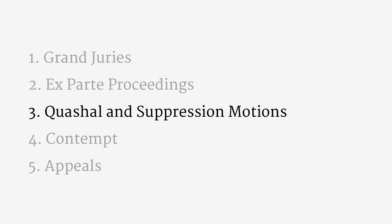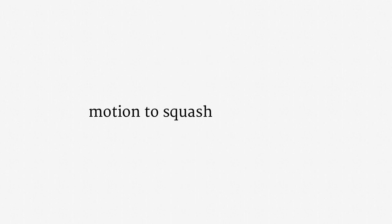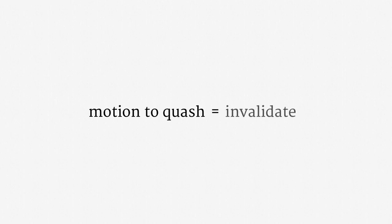Now on to quashal and suppression motions. At some point you might hear a motion to quash called, funnily enough, a motion to squash — but this has nothing to do with autumn vegetables or squishing. It's a motion to quash, and it has a simple role. When a party seeks to quash something, called quashal, all it's asking for is an invalidation. A motion to quash a surveillance order is simply a challenge to that order's validity. Note that a motion to quash is a procedural vehicle — it has to cite specific grounds for quashal. For example, the target of a surveillance order might argue that it wasn't sufficiently precise.